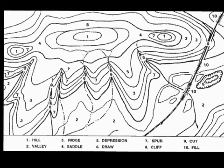Looking at this map, which does not have a contour interval on it, understand that each contour line is a line of equal elevation. Notice that contour lines do not cross. They do not split, nor do they branch off.